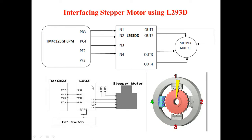PF2 is connected to Input 1, PF3 is connected to Input 2, PB3 (Port B, Pin 3) is connected to Input 3, and PC4 (Port C, Pin 4) is connected to Input 4. Internally, the L293 outputs L1, L2, L3, and L4 are connected to the corresponding pins of the stepper motor.